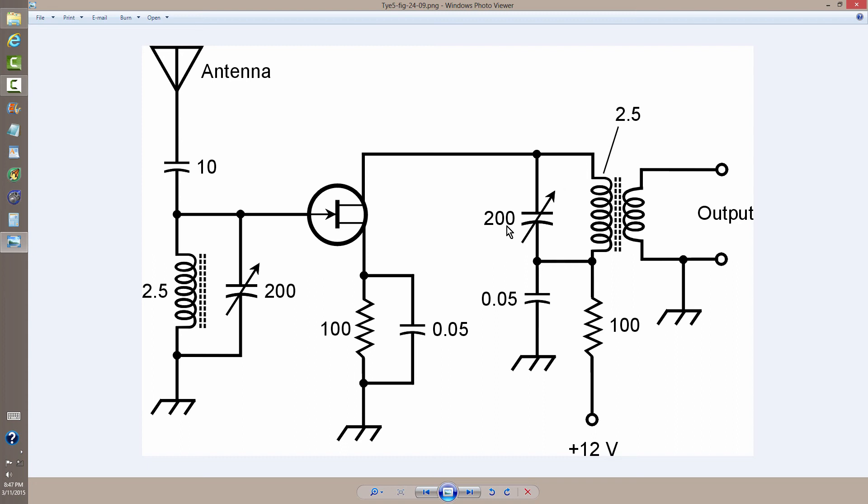You don't have to worry about what the actual value of this capacitor is. Once you achieve resonance, all you need to know is that you've got resonance. And that's indicated by a maximum signal strength at this point right here.